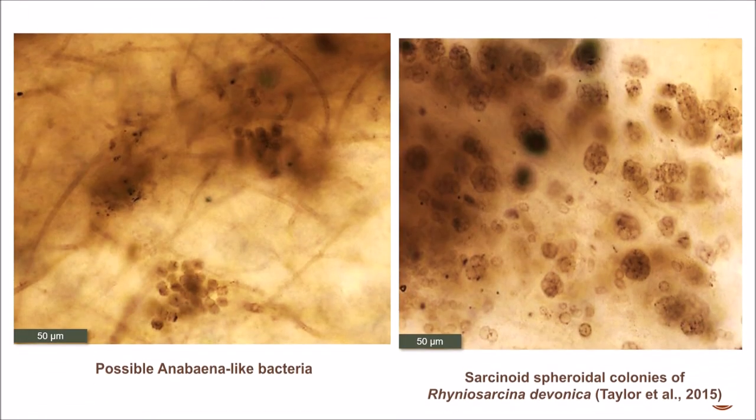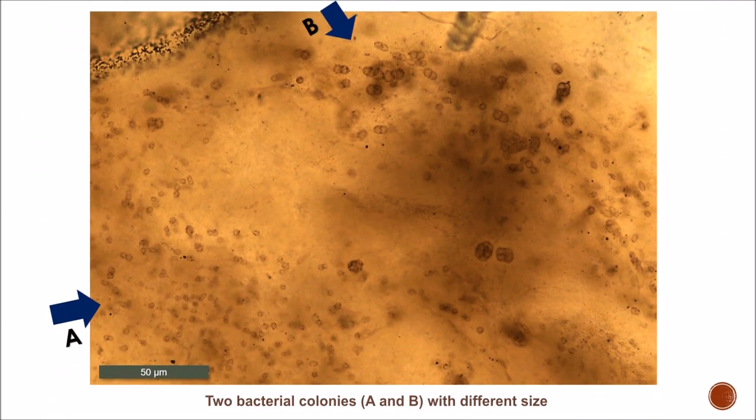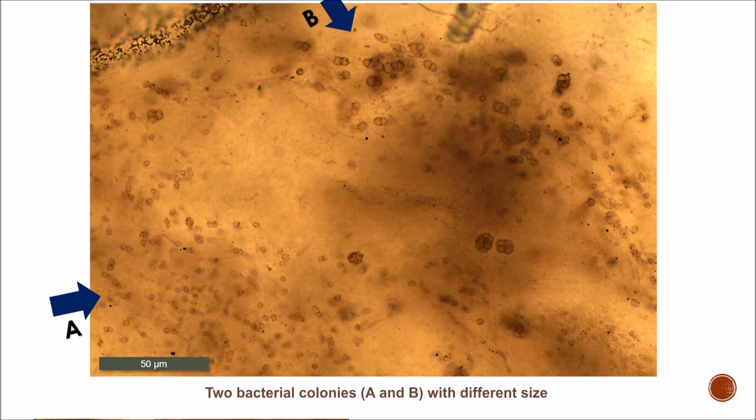we have a filamentous bacterium, bacteria with Anabaena-like morphology, colonies of coccoid bacteria, and the already documented cyanobacteria Rhyniococcus devonicus.